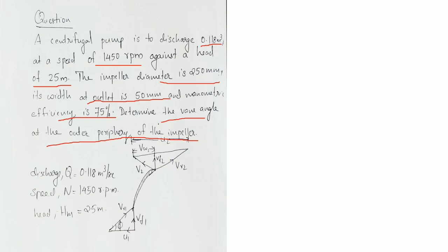We can use the given data. Discharge Q is equal to 0.118 m³ per second.